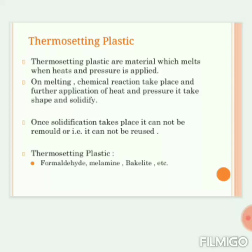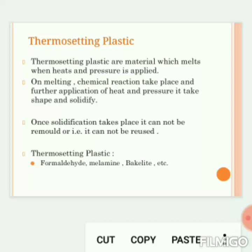Thermosetting plastic is similar to thermoplastic but it cannot be reused. The thermosetting plastic is a material which melts when heat and pressure are applied. On melting, a chemical reaction takes place, and with further application of heat and pressure it takes shape and solidifies. Once solidification takes place, it cannot be remolded — that is, it cannot be reused. Examples of thermosetting plastics are formaldehyde, melamine, and bakelite.